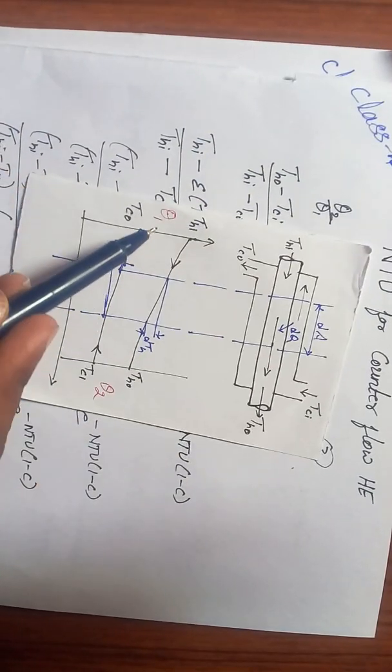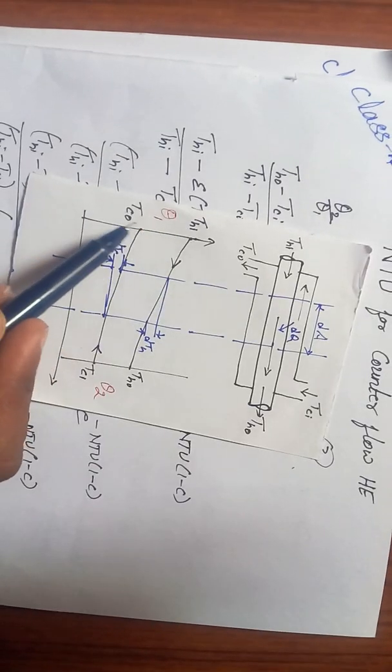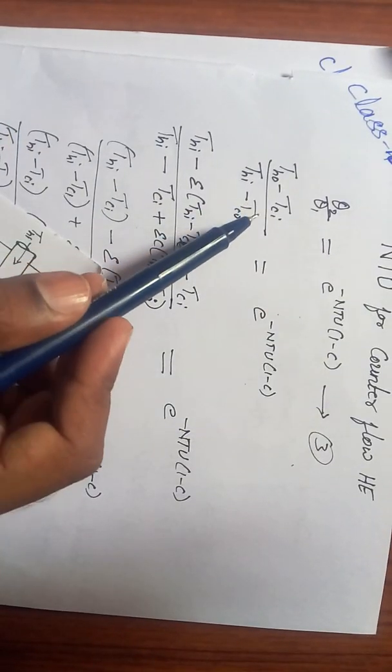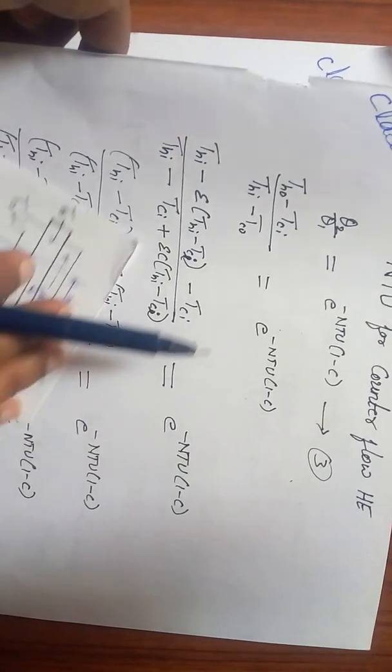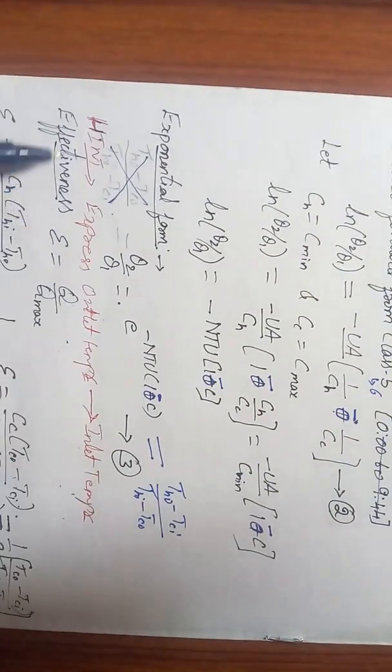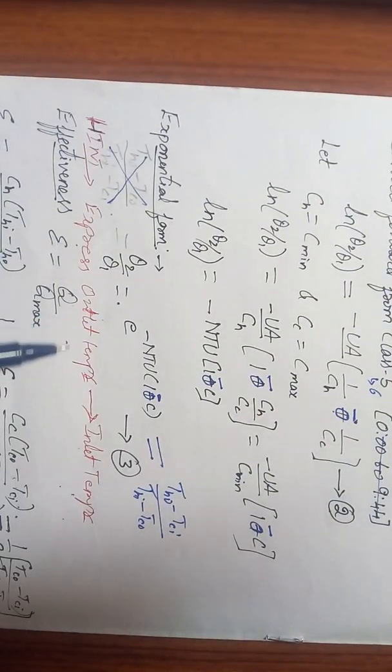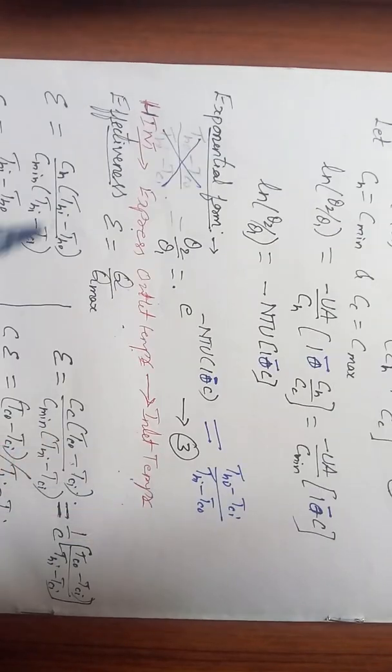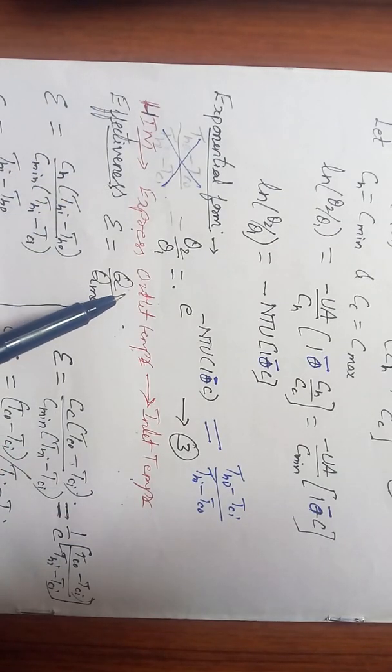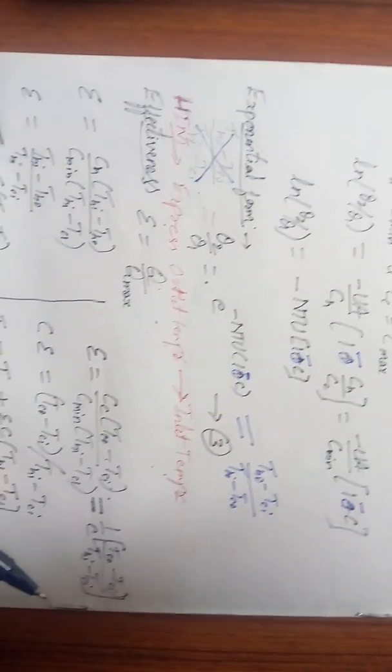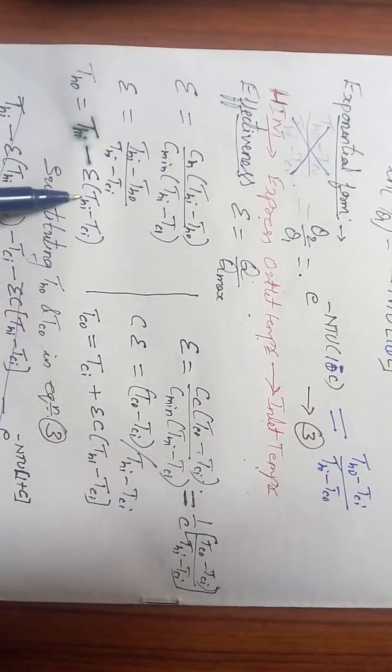Now what was the hint for us in class 9? The hint was to express the outlet temperature in terms of inlet temperature. Write the same equations. Effectiveness, which is the ratio of Q by Q_max. Write the same things and arrive at these two equations for TH_out and TC_out.